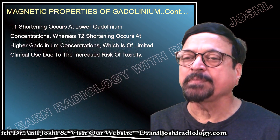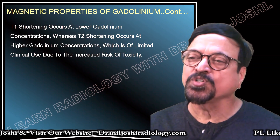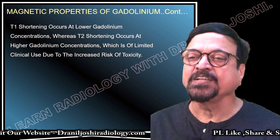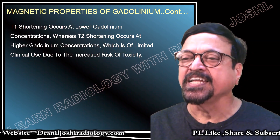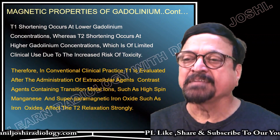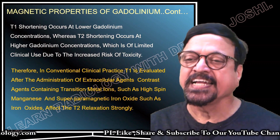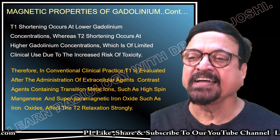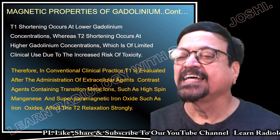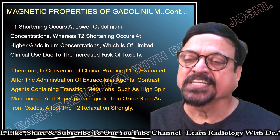T1 shortening occurs at lower gadolinium concentrations, whereas T2 shortening occurs at higher gadolinium concentrations. Higher concentrations have limited clinical use due to increased toxicity risk. Therefore, in conventional clinical practice, T1 is evaluated after administration of extracellular agents. Contrast agents containing transition metal ions such as high-spin manganese, and supermagnetic iron oxide, strongly affect T2 relaxation.